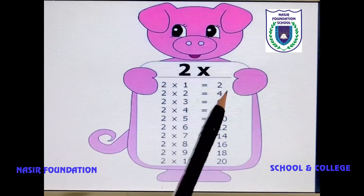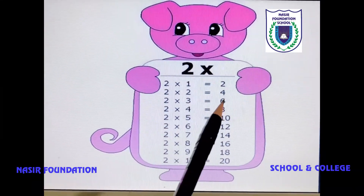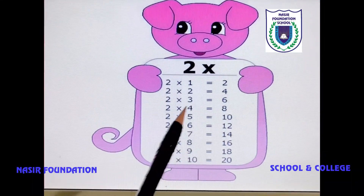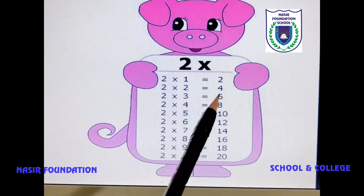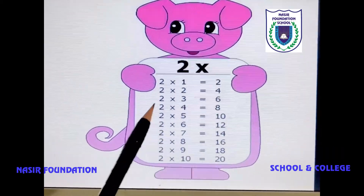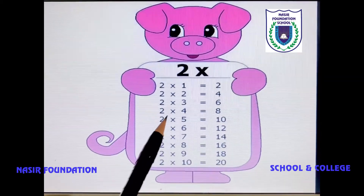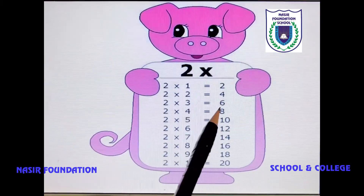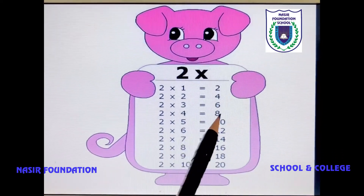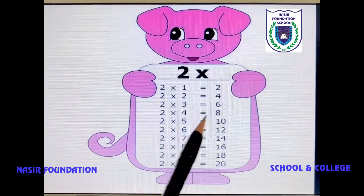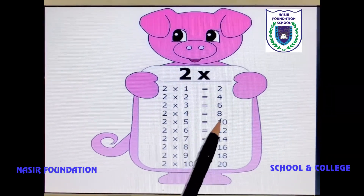2 ones are 2. 2 twos are 4. 2 threes are 6. 2 fours are 8.